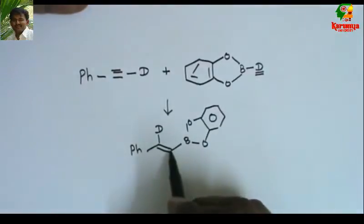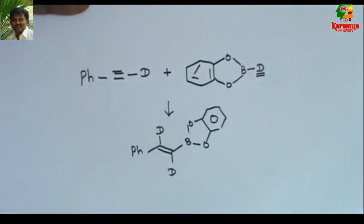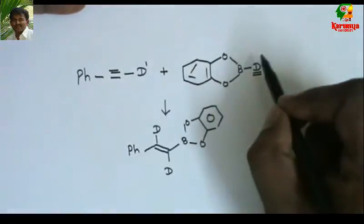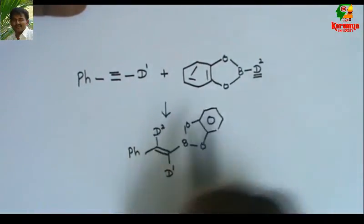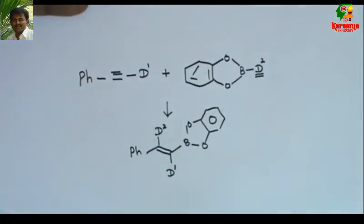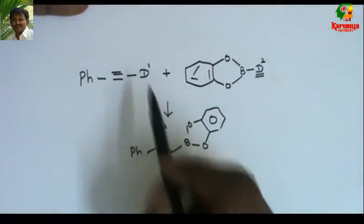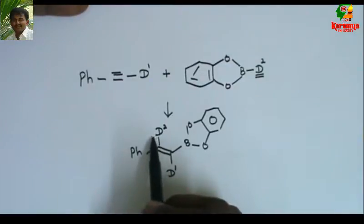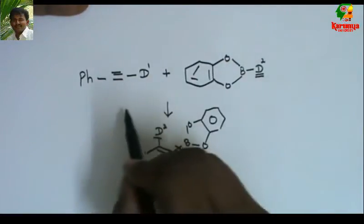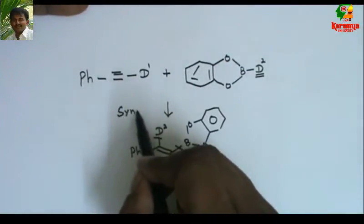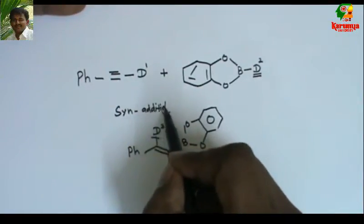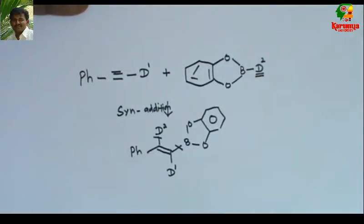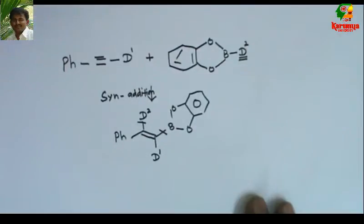There is one more deuterium, so that should come here. I'll assign numbers to make it easy to understand. This deuterium adds here and already this deuterium is here, so these two are syn — they are on the same side. It is very important: addition of borane to a double bond or triple bond is a syn addition.